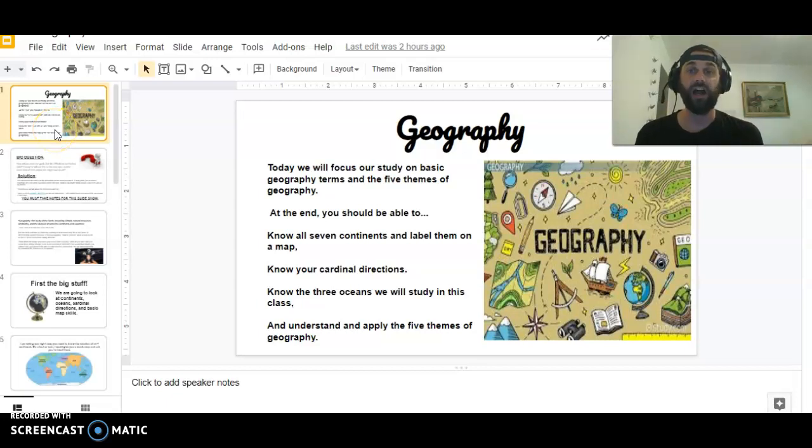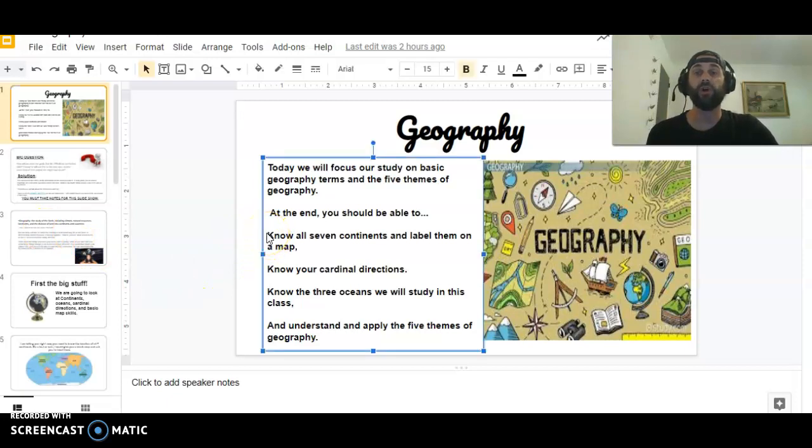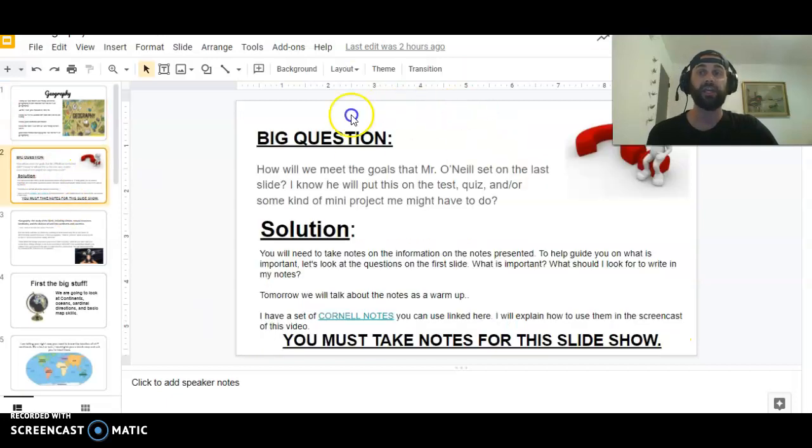Again, today we're going over geography and the first things we got to talk about - we're gonna split it into two sections - but you need to know the continents, the cardinal directions, and the three oceans that we're gonna use in this class. I'll specifically explain those. That's today's goal. Tomorrow's goal is to refresh or go over again the five themes of geography.